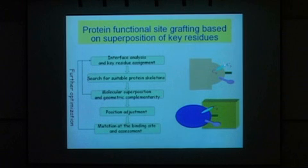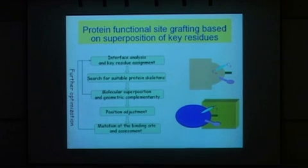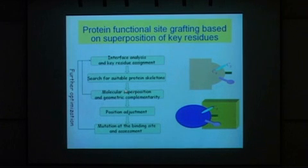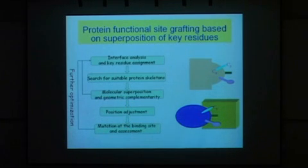We can use naturally occurring protein structures and give them a new function. Our strategy starts from a known protein interaction pair — the target and the ligand — and we try to move the function from the ligand protein onto another scaffold protein. The scaffold protein must have available positions to accommodate the active functional site and form complementary interactions with the target. We search the whole protein data bank for another protein structure that can accommodate the functional sites, starting with Cα and Cβ vectors and matching key interaction pairs.